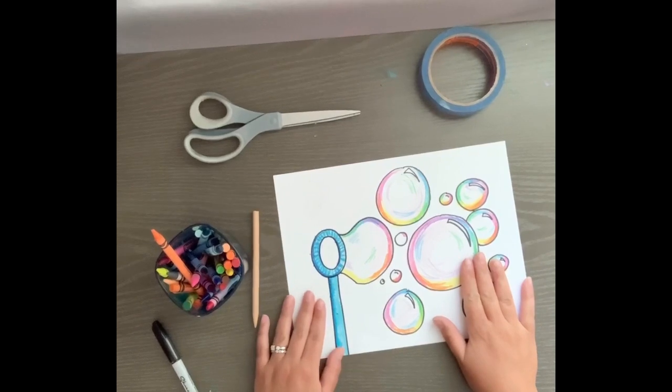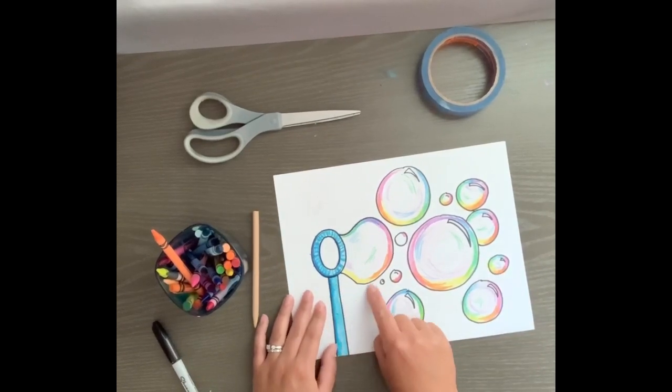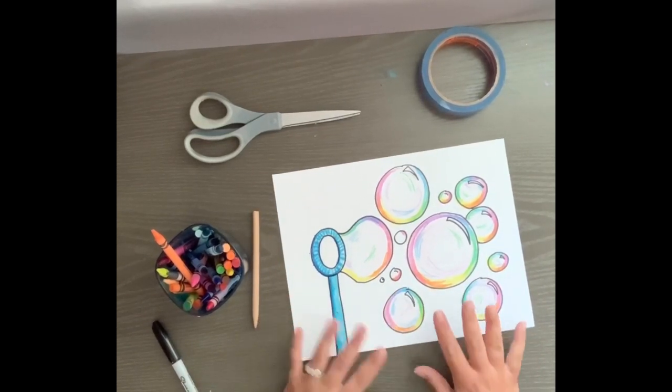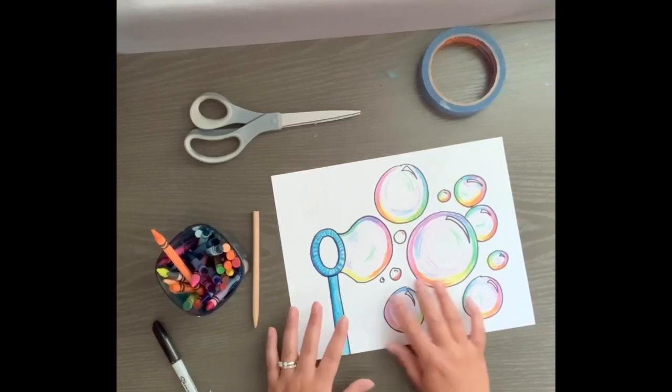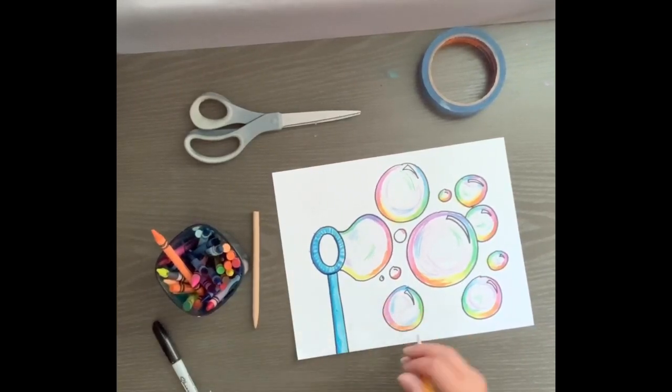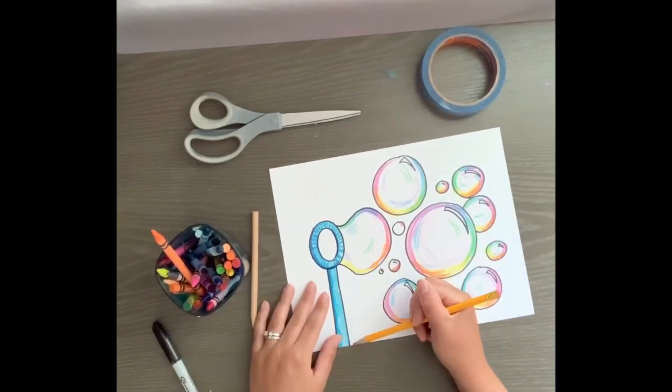Now that I have this all colored, I'm ready to cut it out. When I cut, I want to leave a little bit of white space around everything I'm going to cut. This will help me keep no bubbles from getting cut off.